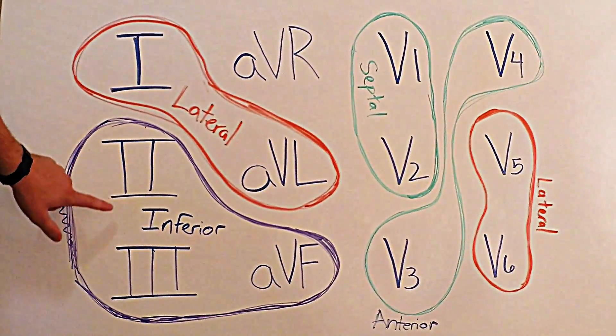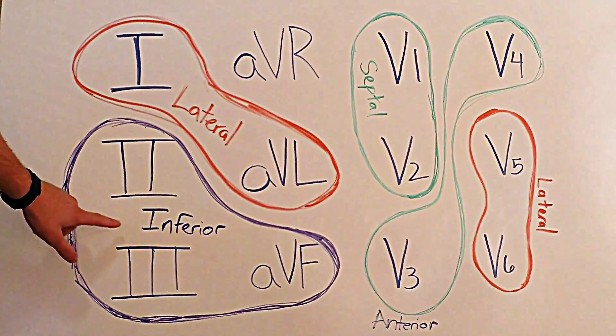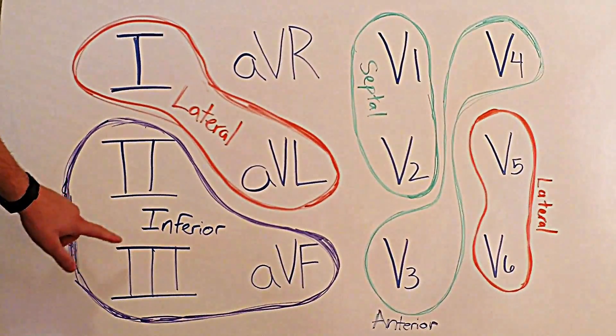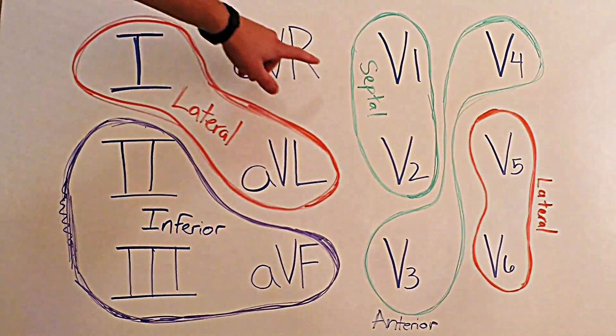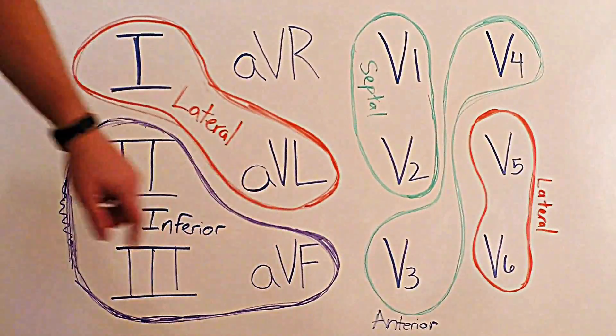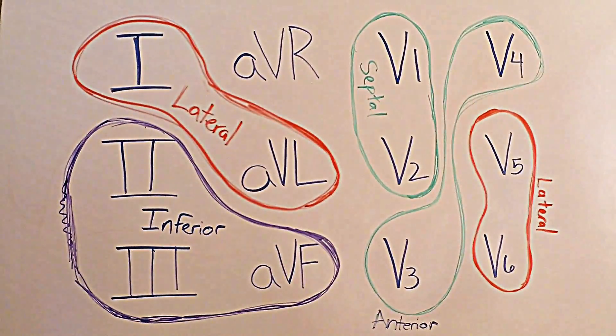Also II, III, and aVF, now you know that the MI is occurring in the inferior side of the heart. Septal and anterior a lot of times you'll see ST elevation not only in V1 and V2, but V3 and V4, so I did both those green because sometimes you'll have what's called an anteroseptal MI, which is pretty common.